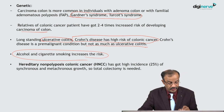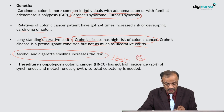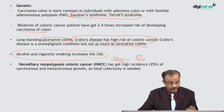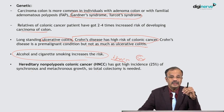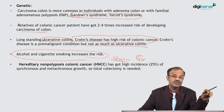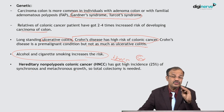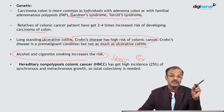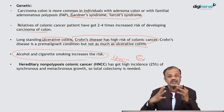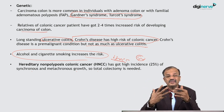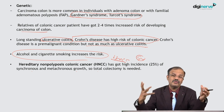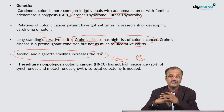Hereditary non-polyposis colonic cancer, HNPCC, is an important short note and MCQ topic. It has a high incidence of synchronous and metachronous growths, so total colectomy is needed. Synchronous means if a patient has a growth in the sigmoid colon and on colonoscopy there is also a growth in the cecum — multiple independent de novo separate malignancies occurring at different sites simultaneously, not spread from one to another. This can also occur in the oral cavity.